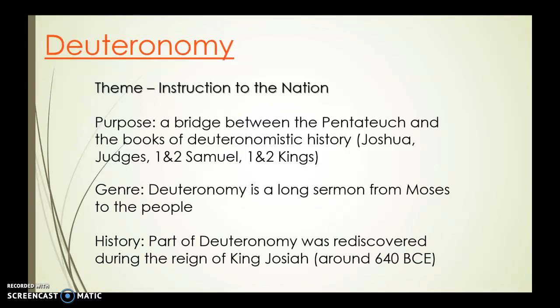The last book of the Pentateuch, or Torah, is Deuteronomy. The theme throughout Deuteronomy is basically instruction to the nation. Israel is at the end of its journey through the wilderness, poised on the edge of the promised land and about to enter it. Moses knows he cannot go — God has told him he will not be entering the promised land. So Moses gives a series of sermons; Deuteronomy can be described as one long sermon Moses gives to the people to ensure they will remain faithful to God as they enter the land. Deuteronomy forms a bridge between the Pentateuch and the books of Deuteronomistic history: Joshua, Judges, 1 and 2 Samuel, and 1 and 2 Kings.